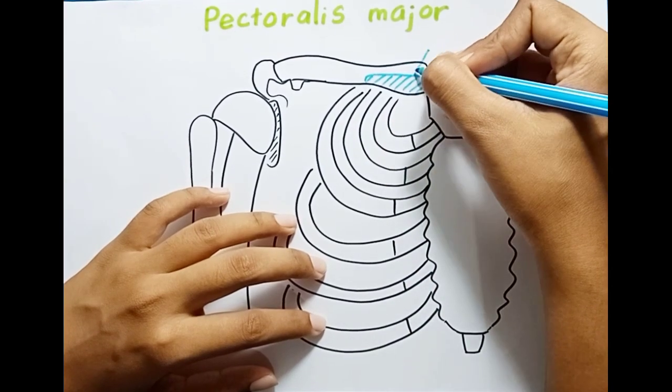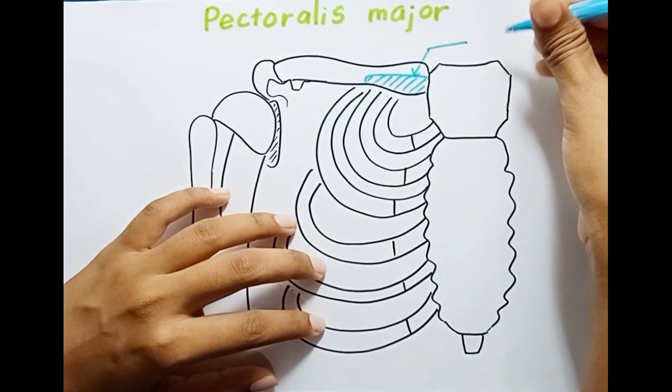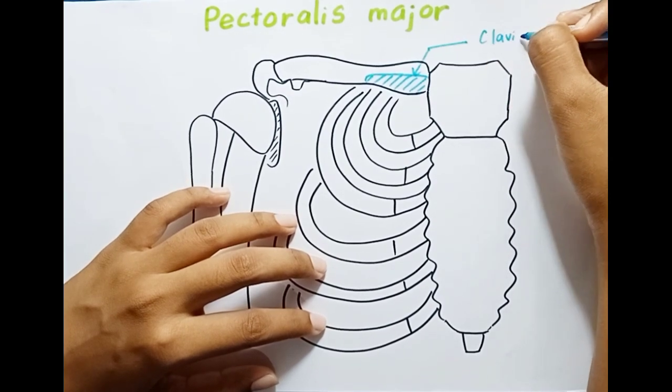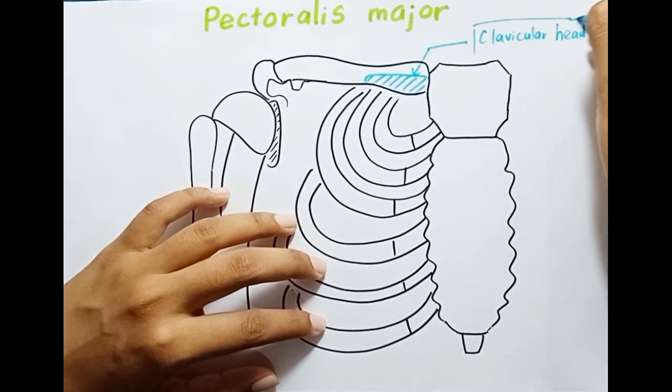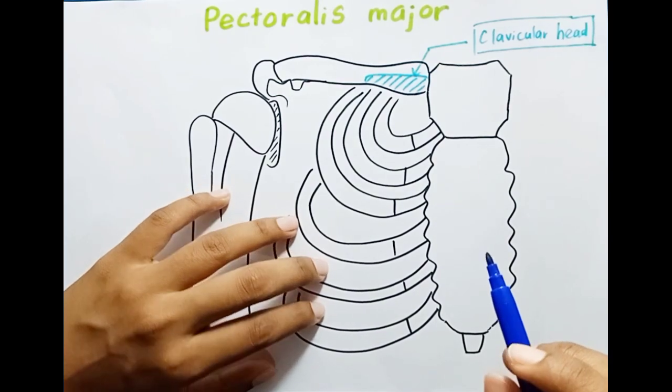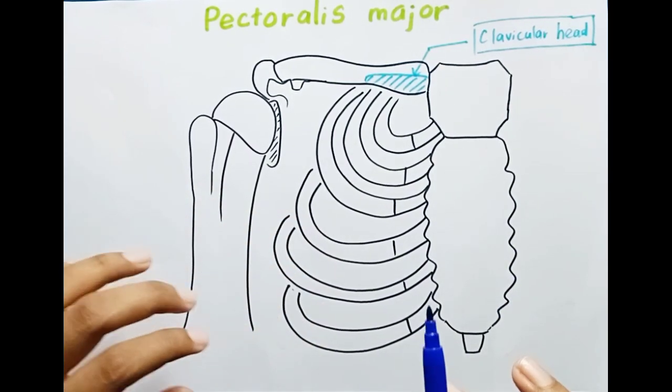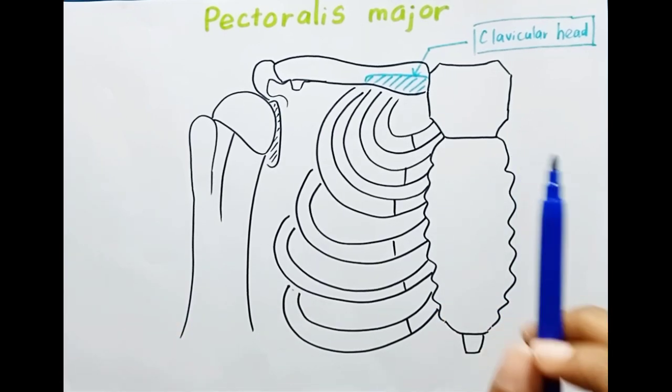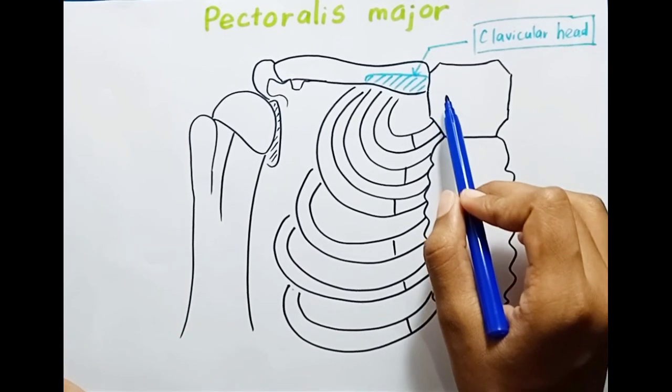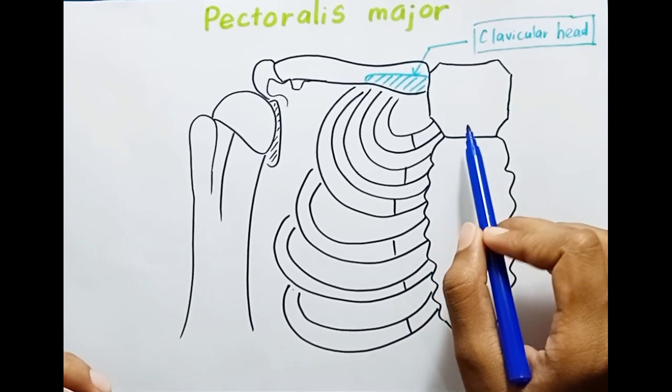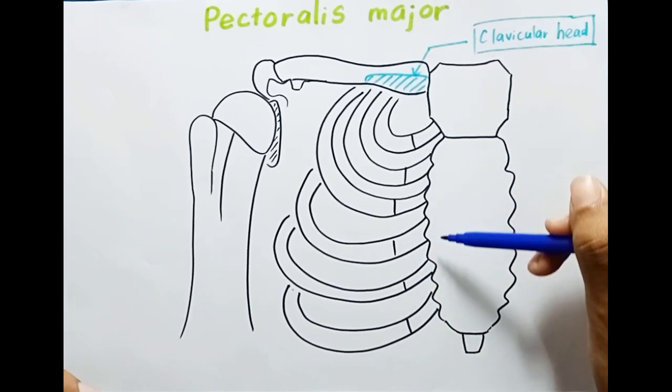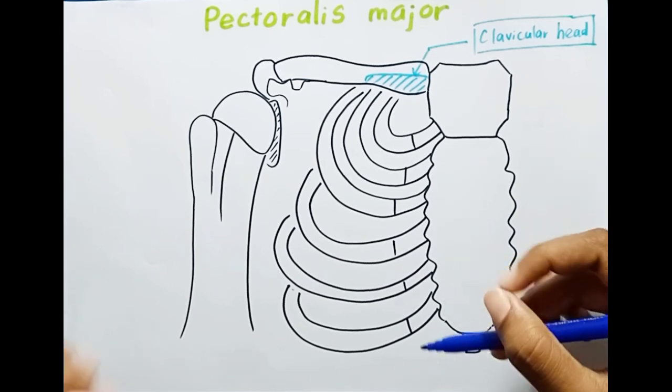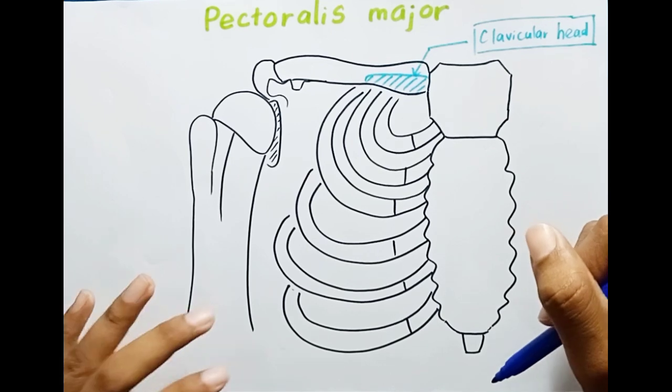This is the clavicular head. The second origin is the sternocostal head, and it arises from the anterior surface, that means the front surface, of the sternum, the superior six costal cartilages, and the aponeurosis of the external oblique muscle.